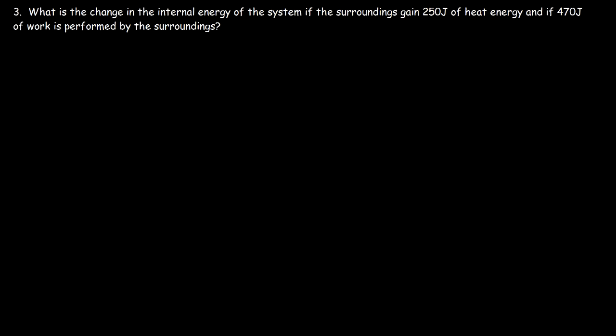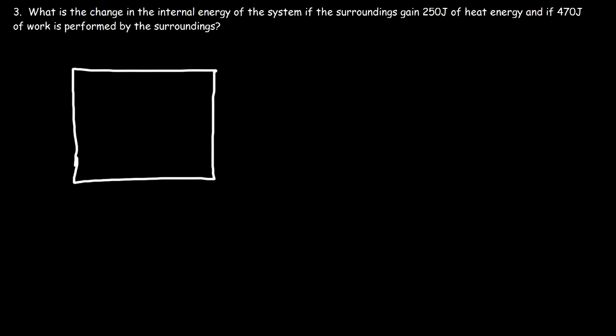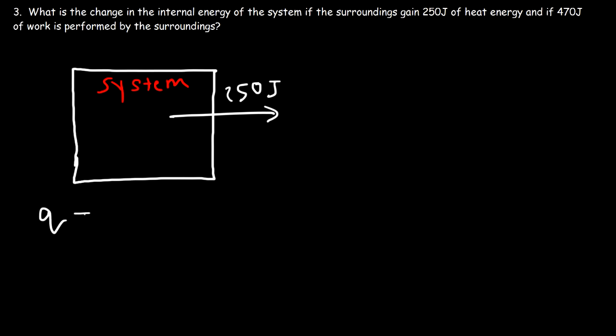Problem 3: what is the change in internal energy of the system if the surroundings gain 250 joules of heat energy and if 470 joules of work is performed by the surroundings? You need to visualize the transfer of energy. If the surroundings gain 250 joules of heat energy, that energy is flowing into the surroundings, so Q with respect to the system is negative 250 joules because heat energy is coming out of the system going into the surroundings.